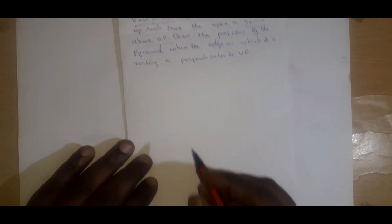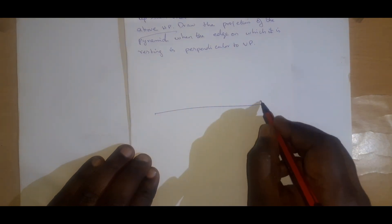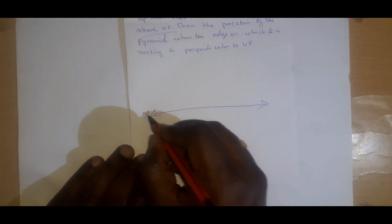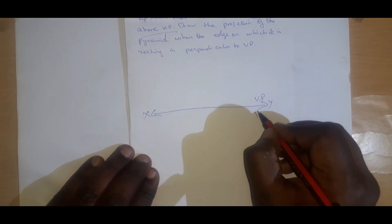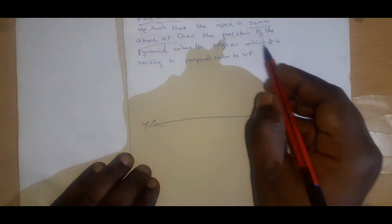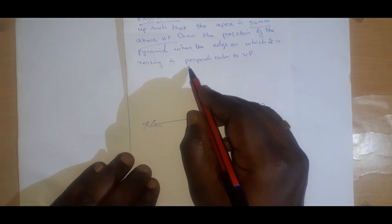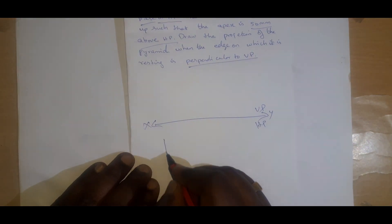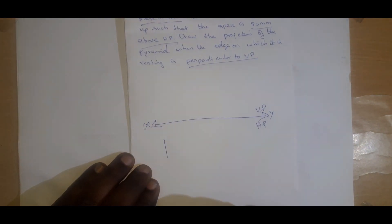Draw the projection of the pyramid when the edge on which it is resting is perpendicular to the VP. Before that, we can draw the XY line like this for the rough diagram — VP and HP. It is said the resting edge is perpendicular to VP, so we draw it perpendicular to VP.